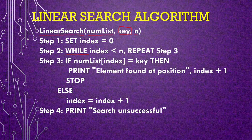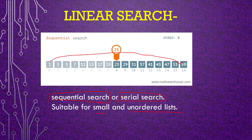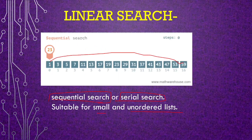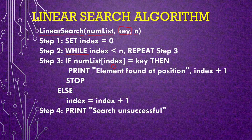After that you create a while loop because you want to search one by one till the length of the list — while index is less than n. If it is less than n, repeat step 3: if num_list[index] equals key, print 'element found at position index plus 1'. Index plus 1 means the position — the first position. Otherwise, index equals index plus 1, which means it will move on to the next position and start searching. Then step 4: print 'search successful'. This is a very simple algorithm for linear search.